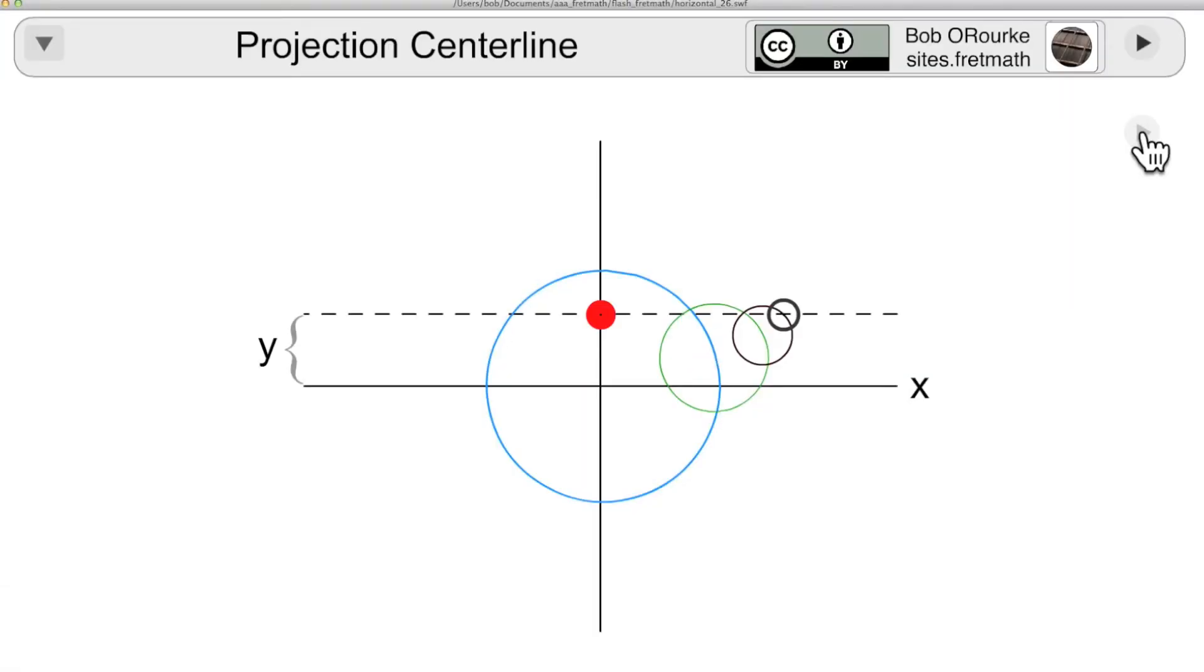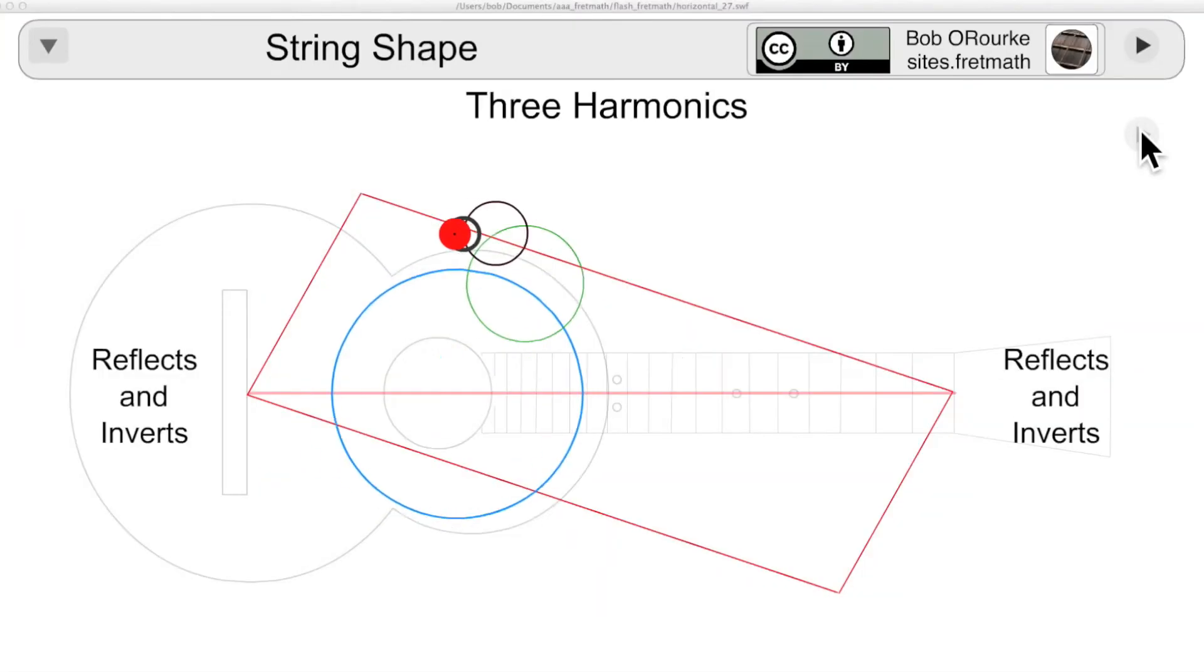What we're interested in is the sum of all the rotations, and that would be the y-value here. If the imagery is moved back and forth along the string length and reflected at the endpoints, the red dot here will trace out the approximate shape of the string.